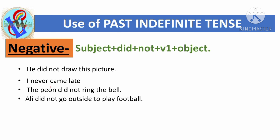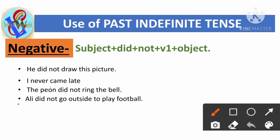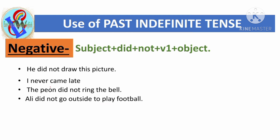'Ali did not go outside to play football.' Here 'Ali' is the subject, followed by 'did not', then the first form of the verb 'go', and he did not go outside to play football.